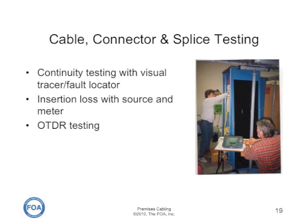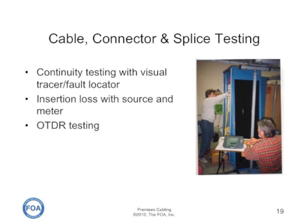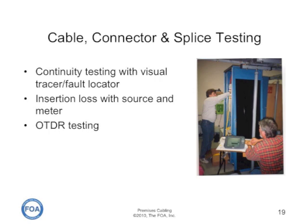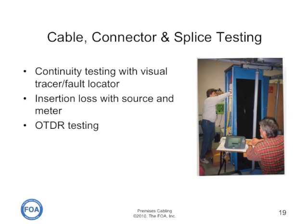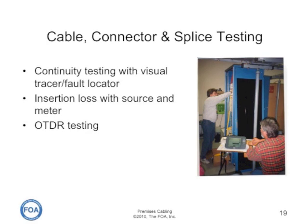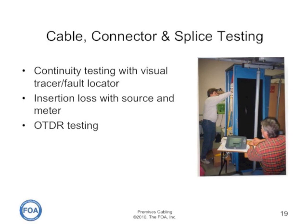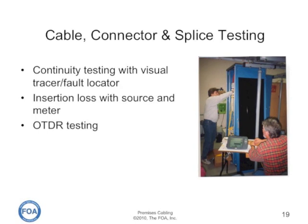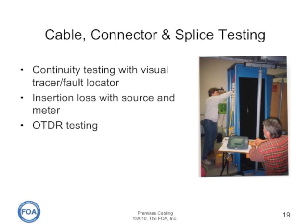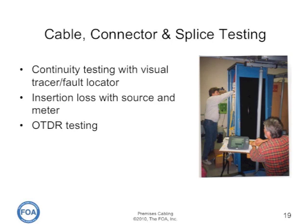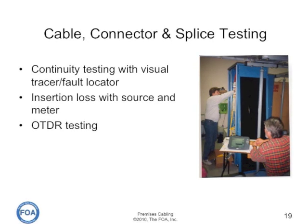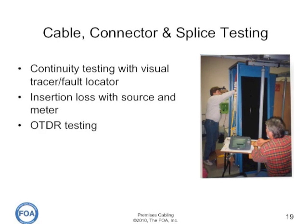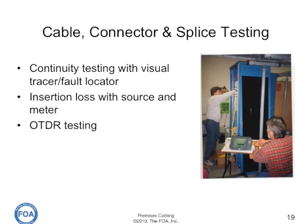Once a fiber optic cable plant has been installed, it must be tested. Testing starts with continuity testing using a visual tracer or fault locator, which ensures that the cable is continuous and has the proper connections — essentially polarity testing to make sure a transmitter will be connected to a receiver. Insertion loss testing uses a source and power meter, which emulates the way the cable will actually be used by a transmitter and receiver, giving a loss reading used for acceptance testing. OTDR testing can also be done on some premises cables if they're long enough, and is used primarily as a troubleshooting tool.